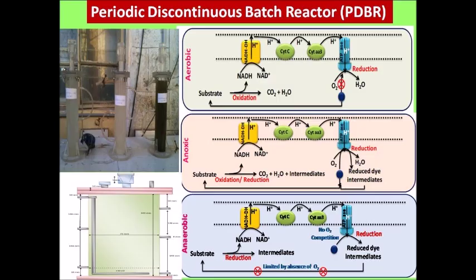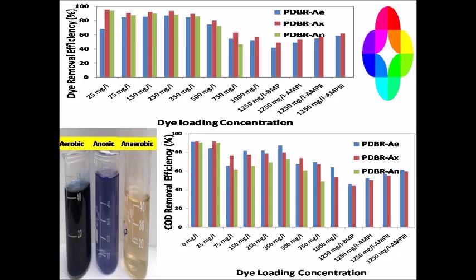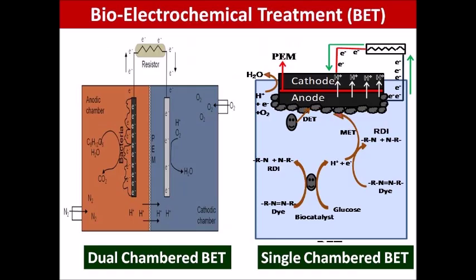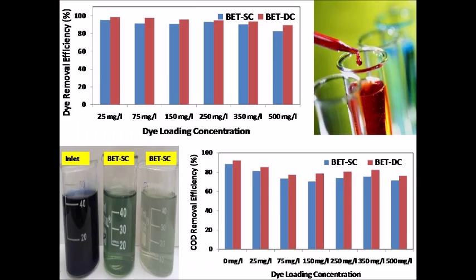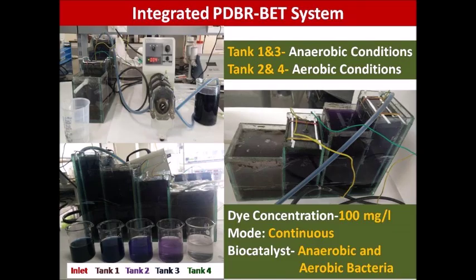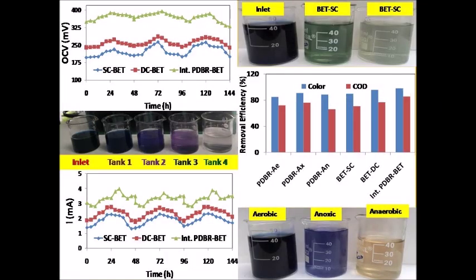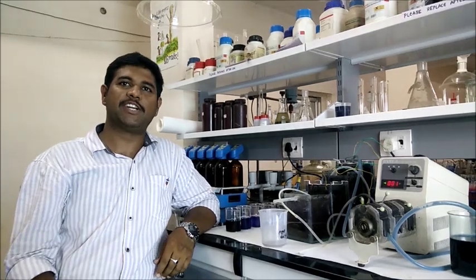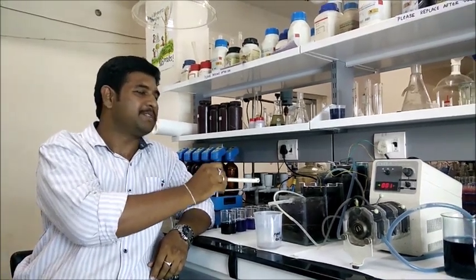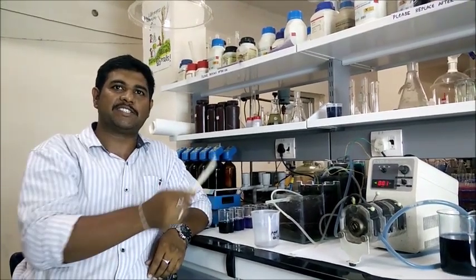In the PDPR system, anoxic and anaerobic conditions are used, and colour and sewage removal were observed. In the BET system, both single-chambered and dual-chambered configurations are operated, and dye and sewage removal were very high compared to PDPR operation alone. When integrating both PDPR and BET operations, it is very successful and efficient for dye removal, achieving more colour and sewage removal than either system individually. This is a novel integrated PDPR-BET system designed to treat Acid Black 10B dye.